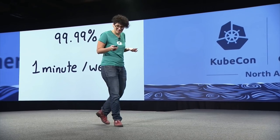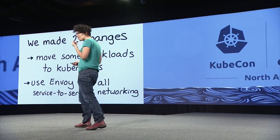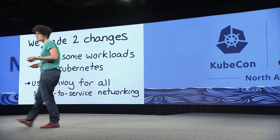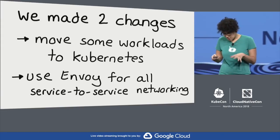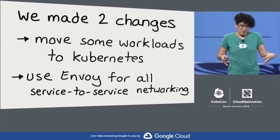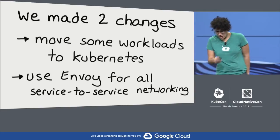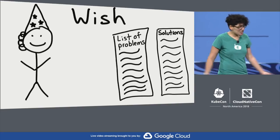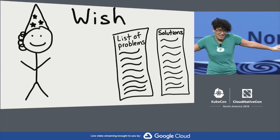So it's not a lot of time. I'm going to be talking about two changes we've made. One is we moved some of our workloads to Kubernetes — a bunch of cron jobs, machine learning workloads, as well as some HTTP services. We also moved to using Envoy for all of our service-to-service networking, which is a really big internal networking change, and to use mutual TLS.